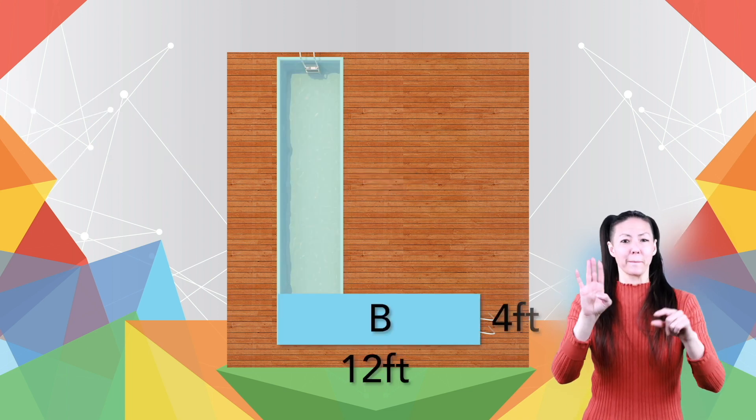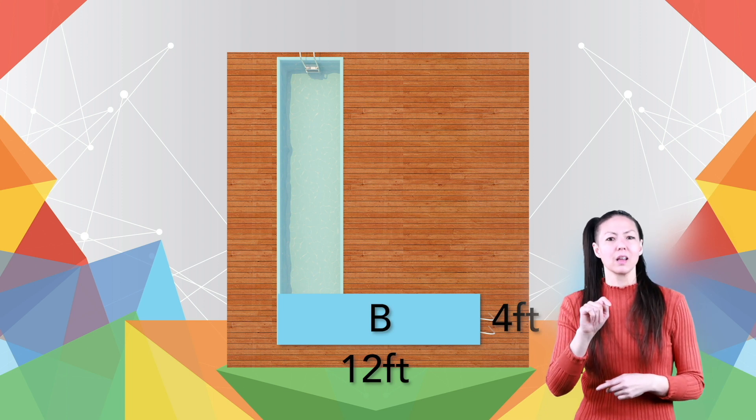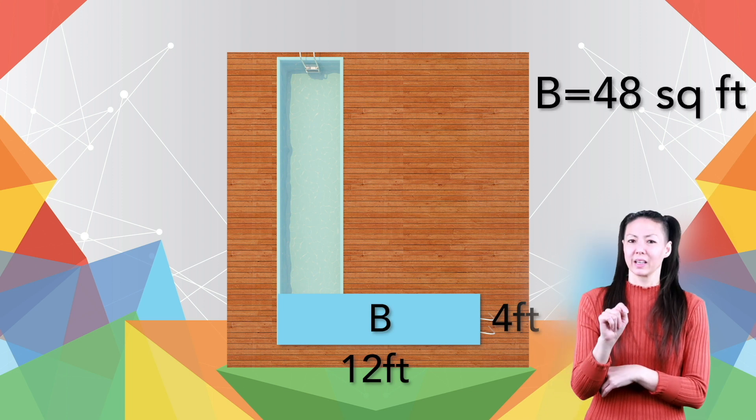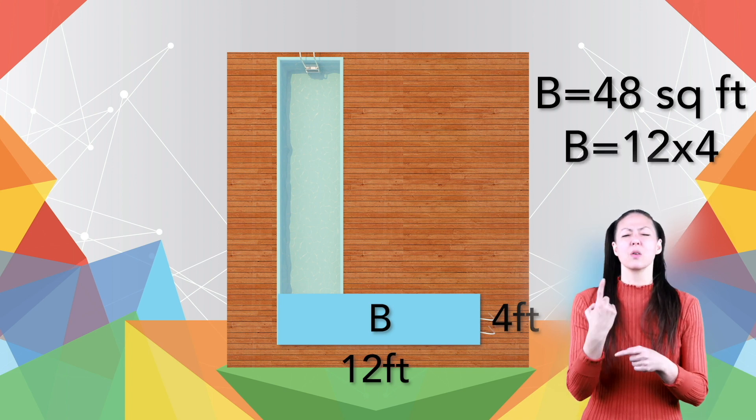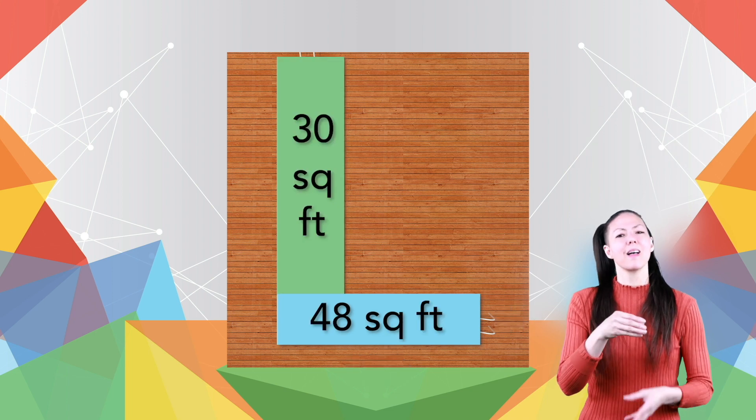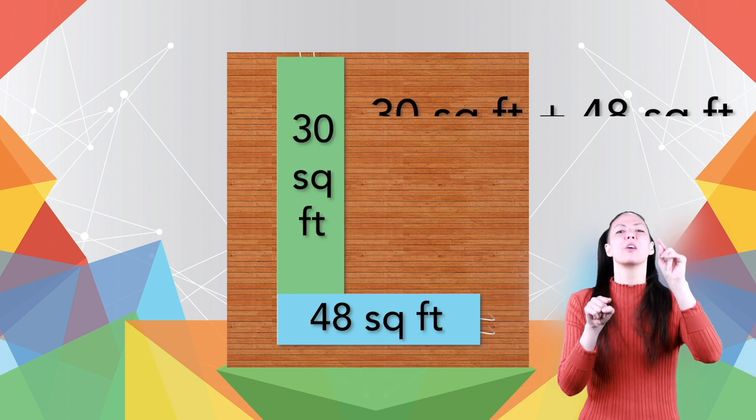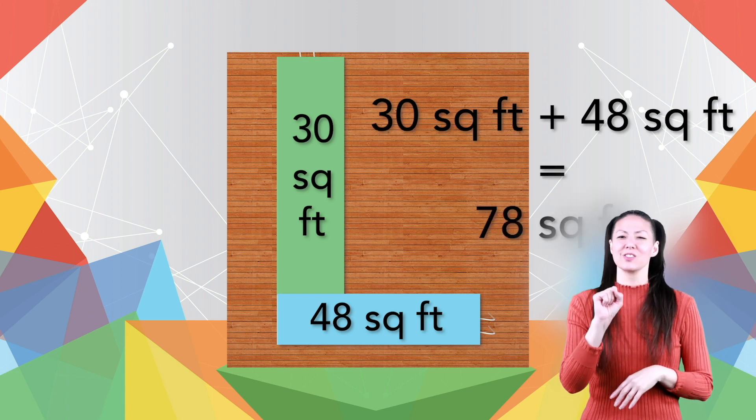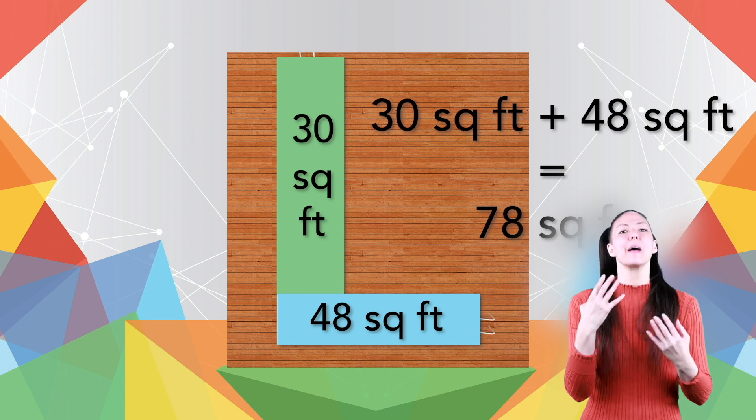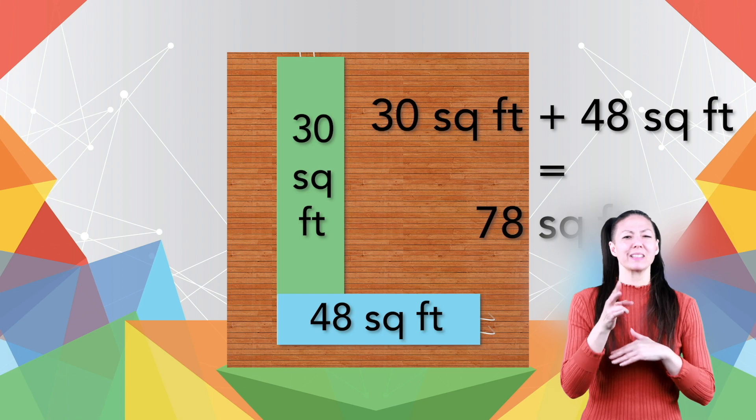Rectangle B has a length of 12 feet and a height of 4 feet. Its area is 48 square feet, or 12 feet times 4 feet. To find the total area, you need one more step. You add the square feet of both the rectangles together. 30 square feet plus 48 square feet equals 78 square feet. Now every time you take a swim, you can say, if you need me, I'll be doing laps in my 78 square foot pool, to which your friends would say too much information.